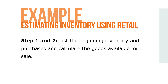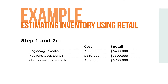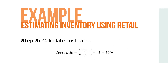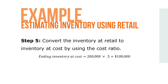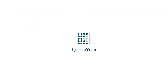Steps 1 and 2: List the beginning inventory and purchases and calculate the goods available for sale. Step 3: Calculate the cost ratio, where $350,000 over $700,000 equals 0.5 or 50%. Step 4: Find ending inventory at retail, where ending inventory at retail equals $700,000 minus $500,000 to equal $200,000. Step 5: Convert the inventory at retail to inventory at cost by using the cost ratio, where ending inventory at cost equals $200,000 times 0.5, or $100,000 in ending inventory at cost.